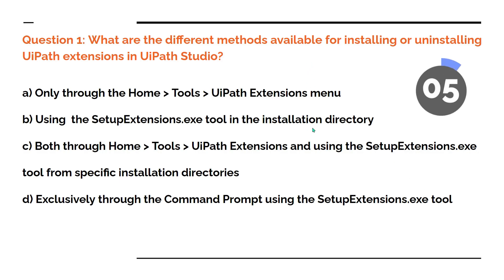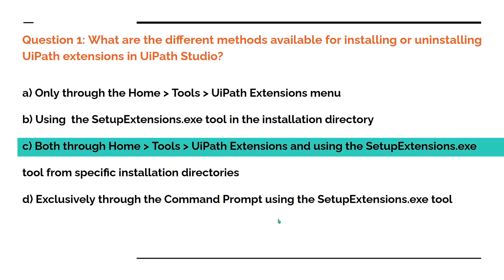I hope you have commented the answer. Let me reveal the answer — the answer is C. We can install the extension using the Home > Tools > UiPath Extension option in UiPath Studio, and also by using setup extension.exe. For this demo, if you haven't seen it, please watch the previous video to see the entire demo on how to install using setup extension in the command line.